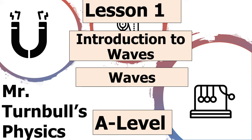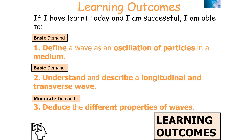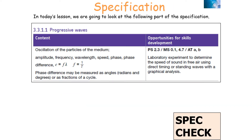Hello and welcome to this video on an introduction to waves, which is part of the waves topic in AQA A-level physics. In this lesson, we're going to look at how to describe the properties of waves. By the end, we should be able to define a wave as an oscillation of particles in a medium, understand and describe longitudinal and transverse waves, and deduce the different properties of waves. We're covering AQA A-level physics specification 3.3.1.1: progressive waves.